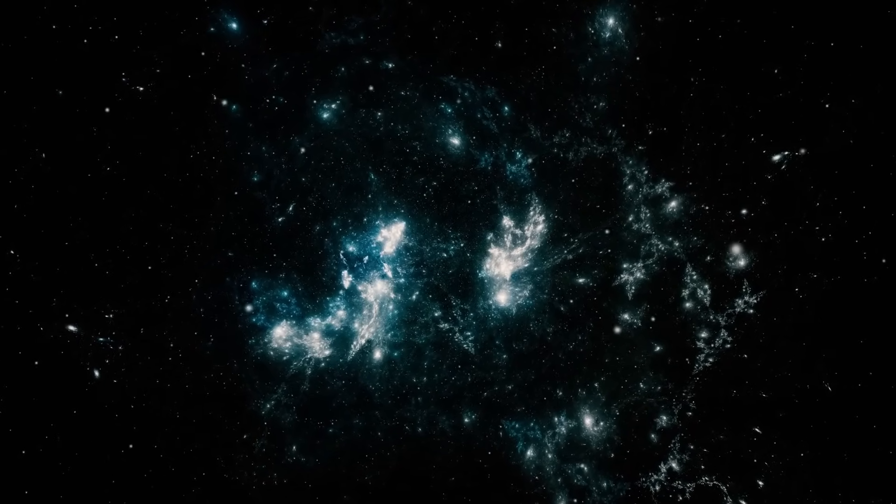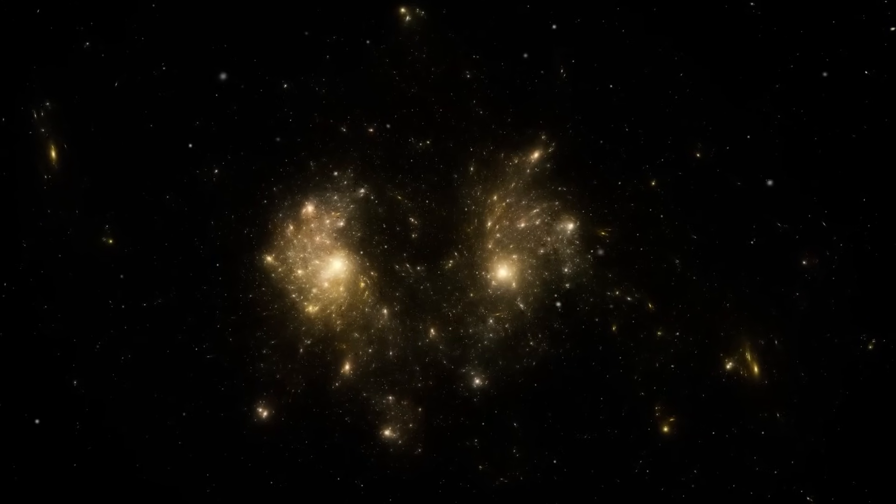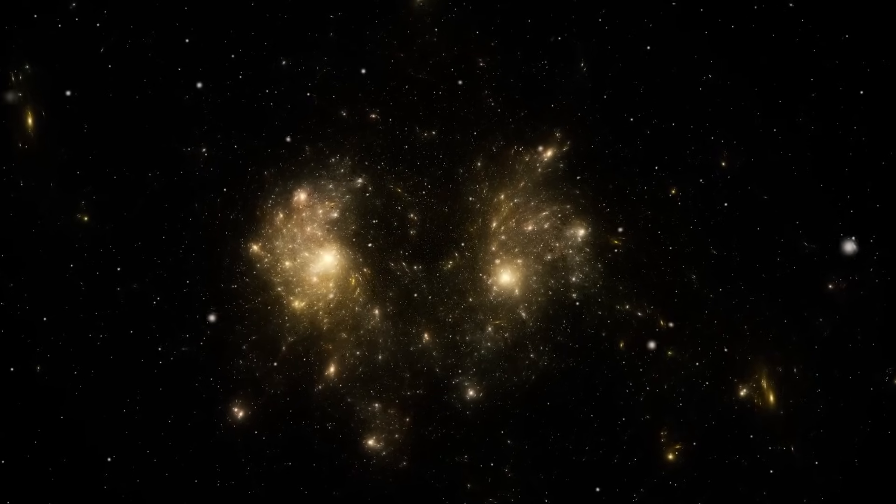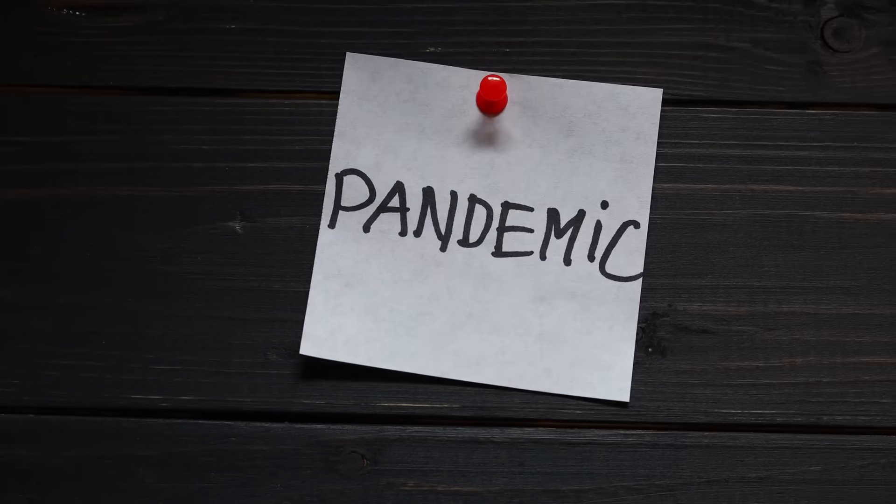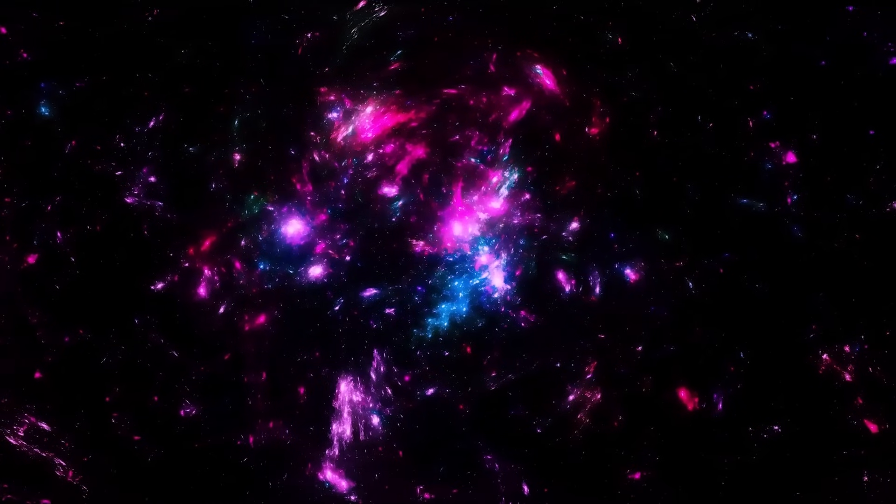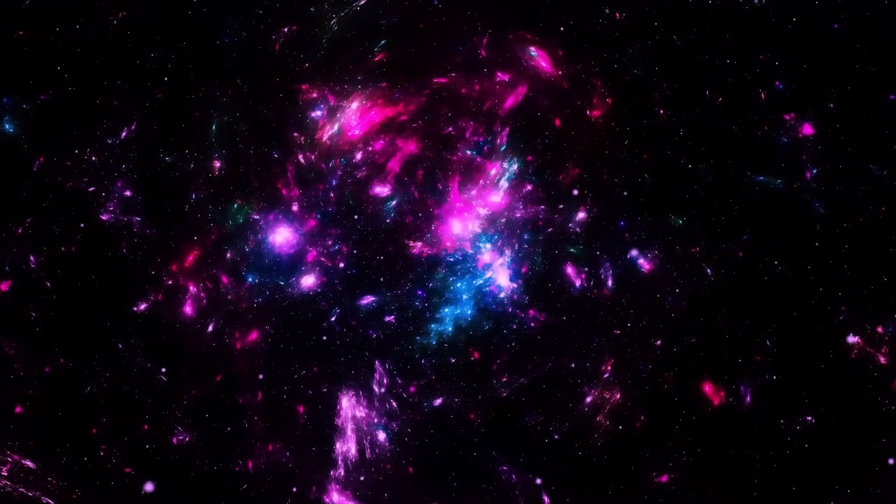Comets sublimate, meaning their ice turns directly into gas when heated by the sun. And it's this process that creates both the coma and the tail. 3-Atlas is performing the first part of the act with incredible gusto, but seems to be completely ignoring the grand finale. The gas is just appearing and then lingering in this horrifying red cloud. It's a cosmic magic trick without a magician. And it's happening on a scale that is hard to comprehend.